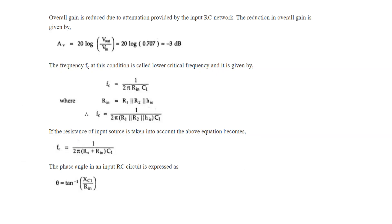Overall gain is reduced due to attenuation provided by the input RC network. The reduction in overall gain is given by Av = 20 log(Vout/Vin), that is 20 log(0.707) = −3 dB.